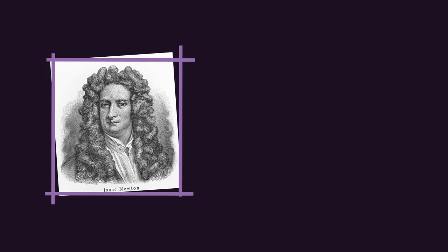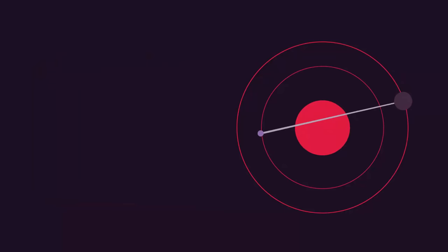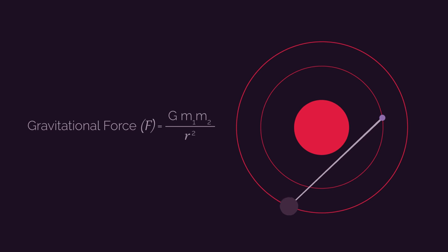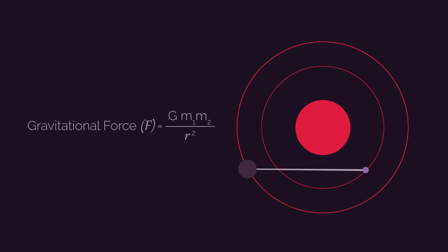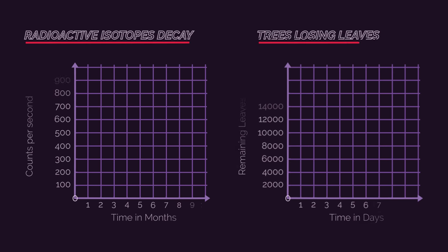You may be thinking: why do we care about reciprocal functions? But actually, they're really important. Starting with Isaac Newton, he deduced that the forces needed to hold planets in orbits is a reciprocal relationship with the squares of their distances. So as the distance between two planets increases, the gravitational force decreases. Other examples are radioactive isotopes decay reciprocally, and trees losing their leaves.